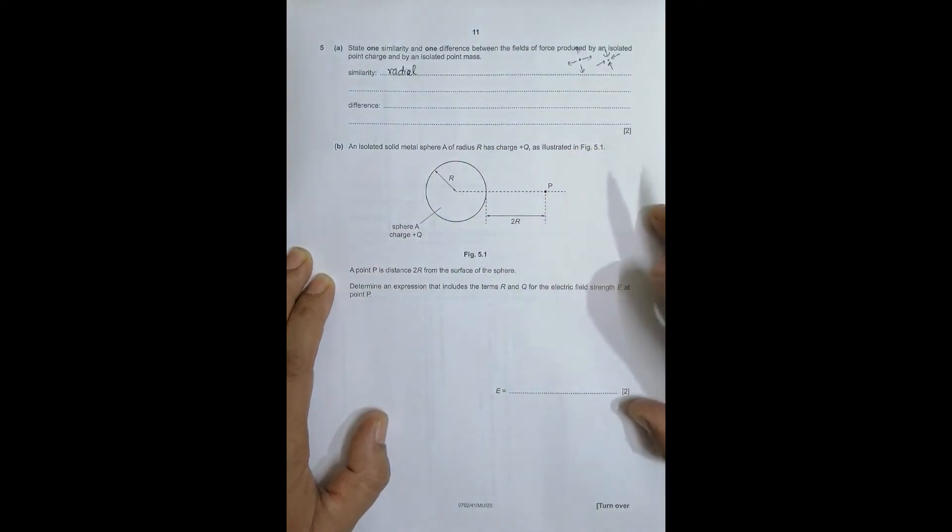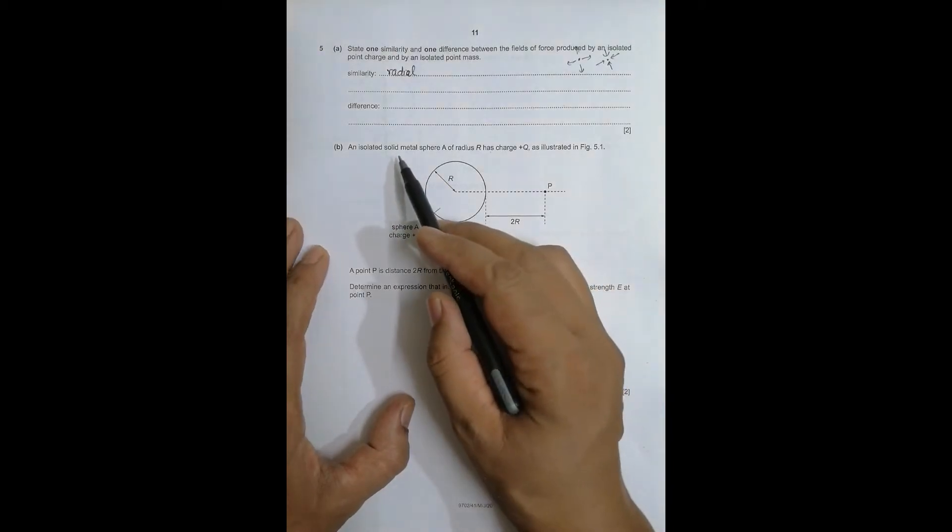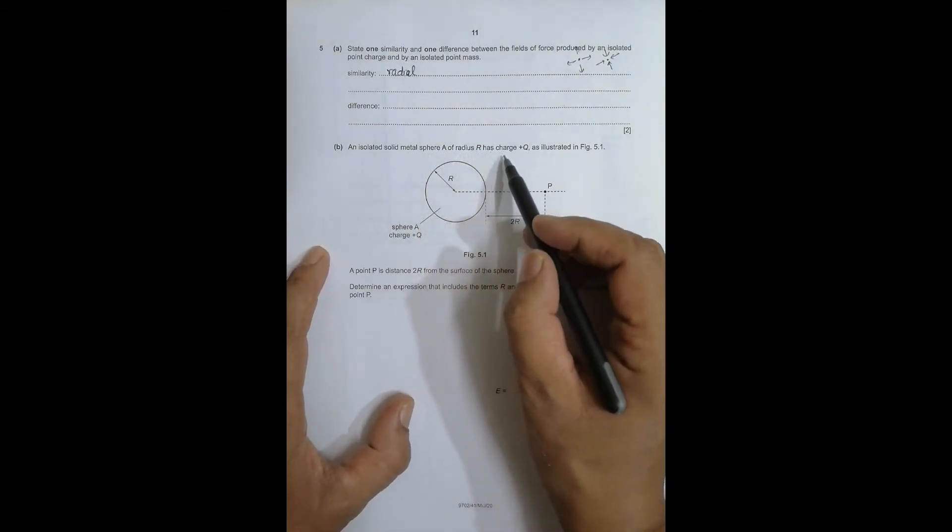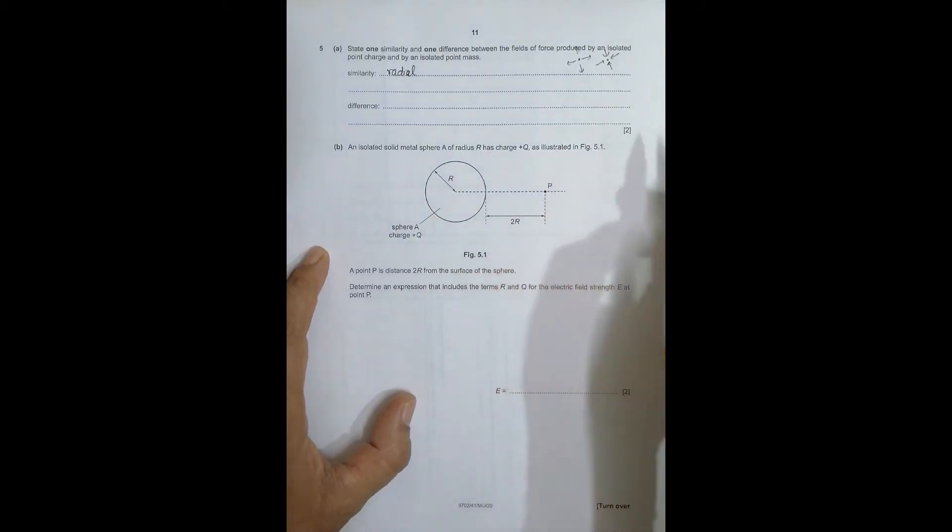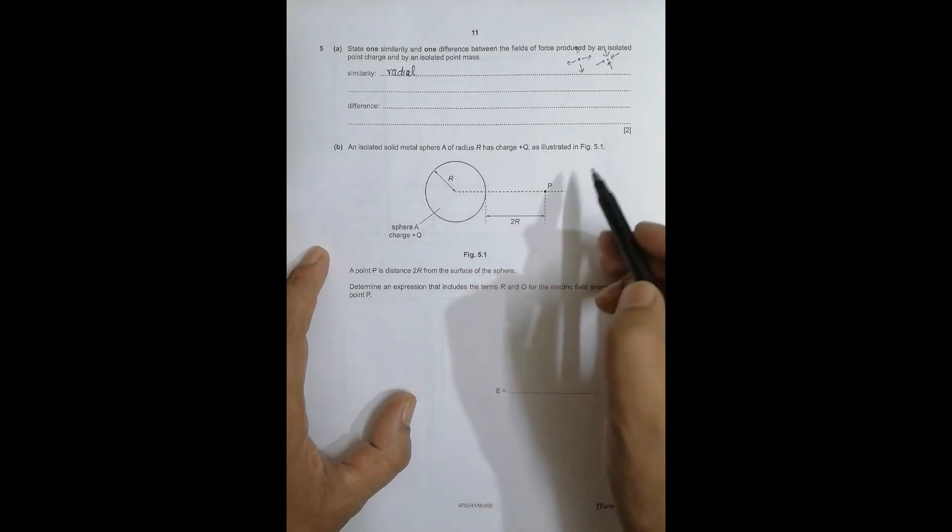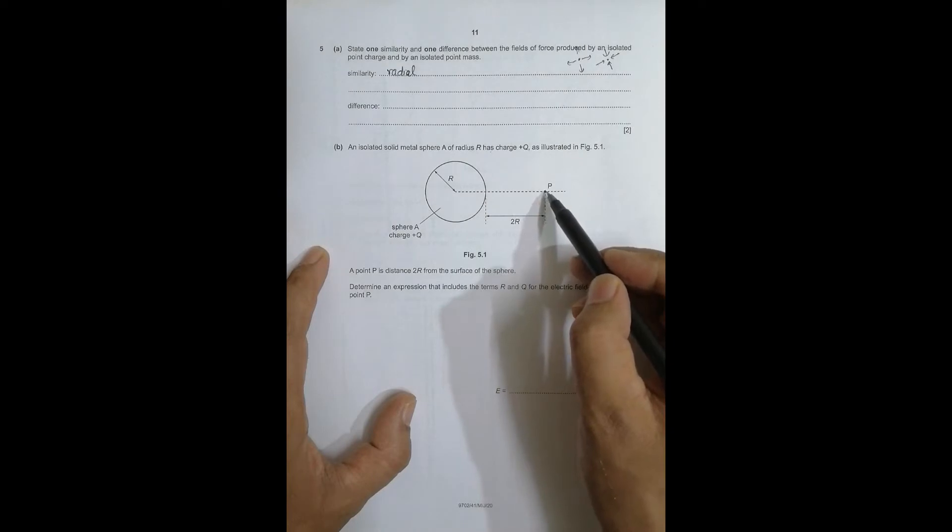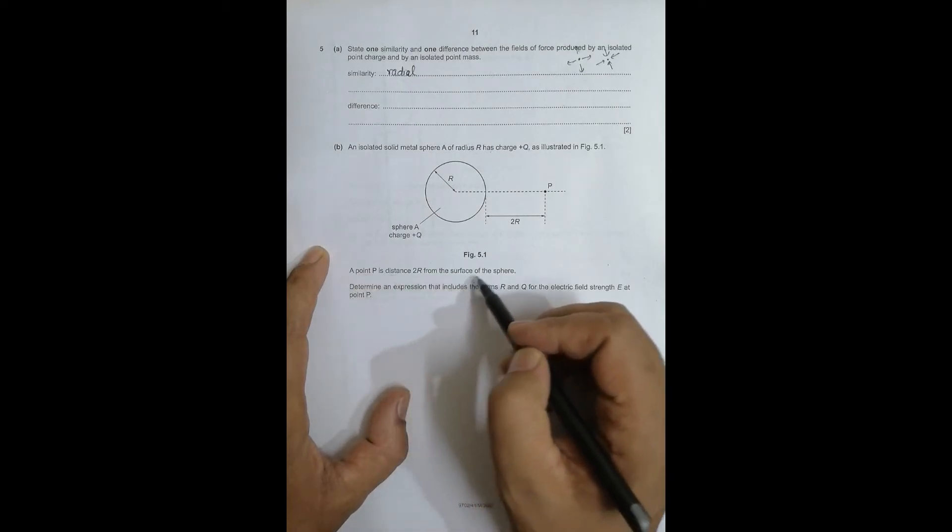Number B: An isolated solid metal sphere of radius R has charge +Q as illustrated in Figure 5.1. As you can see, the radius is this capital R. Point P is at a distance of 2R from the surface, which means the whole distance from the center will be 2R plus R equals 3R.